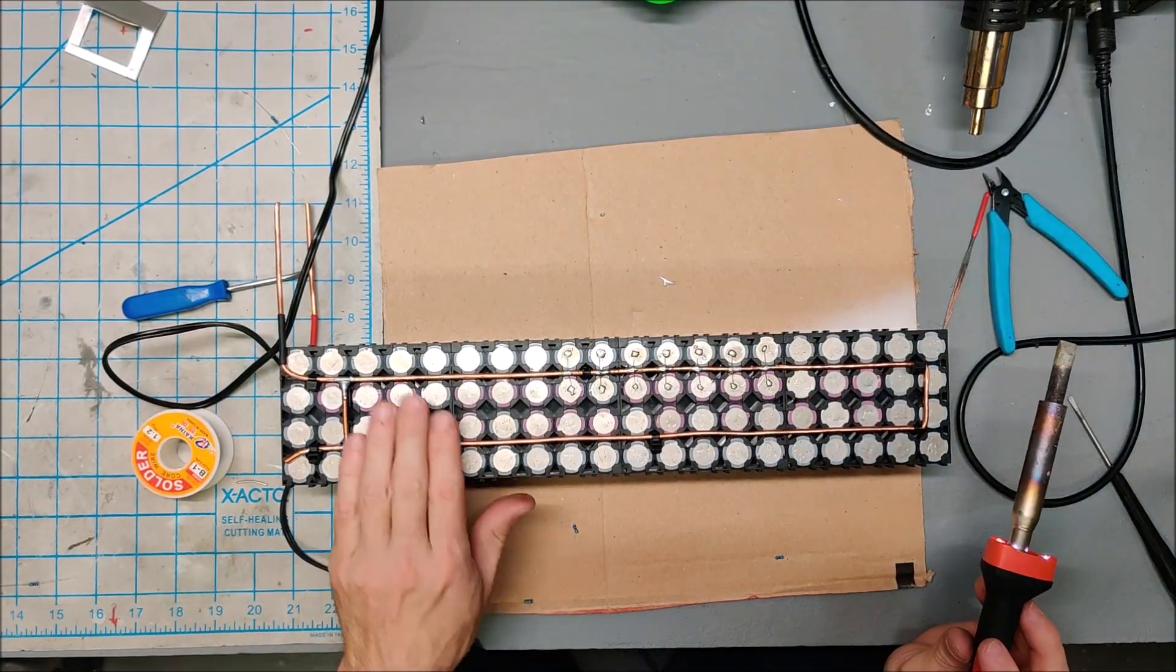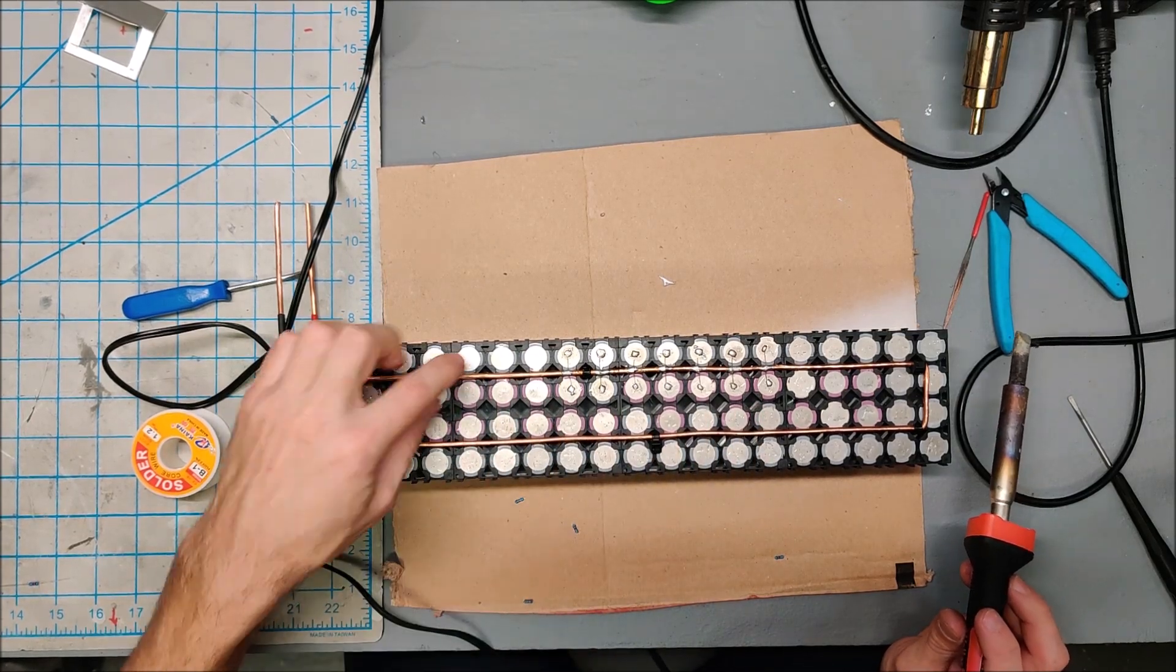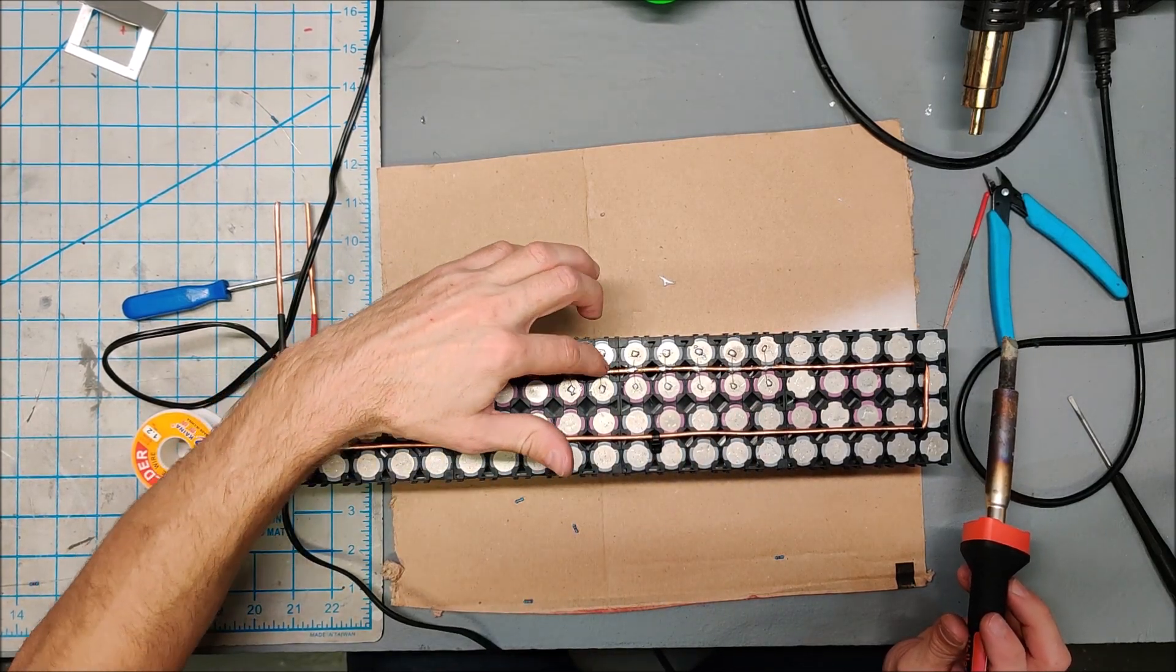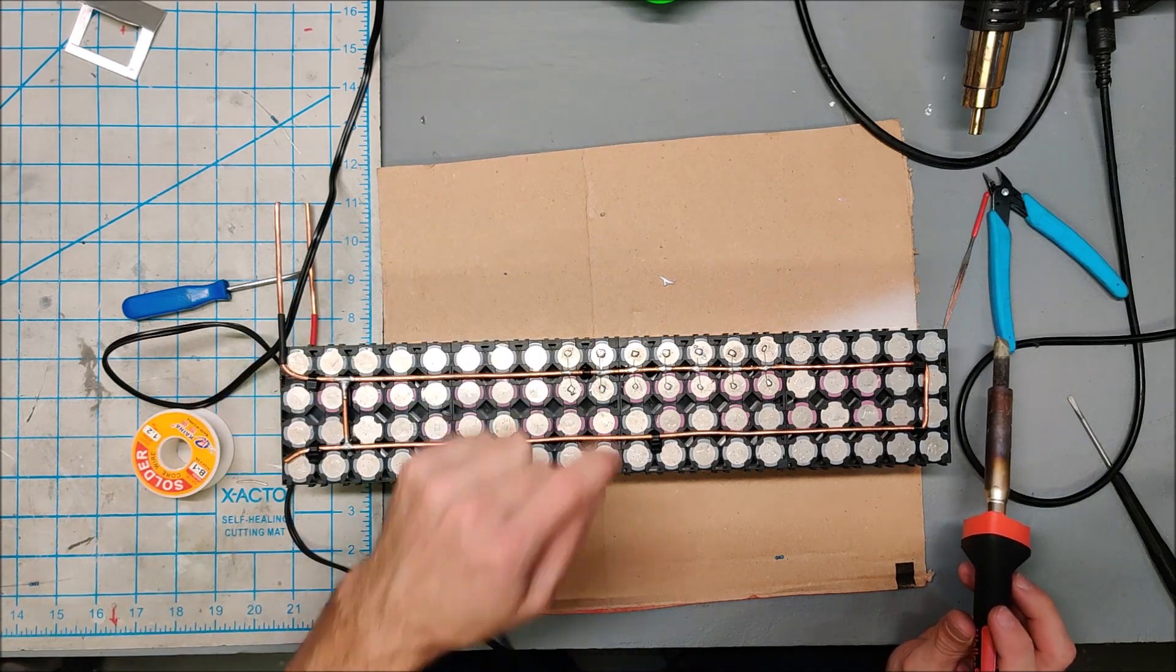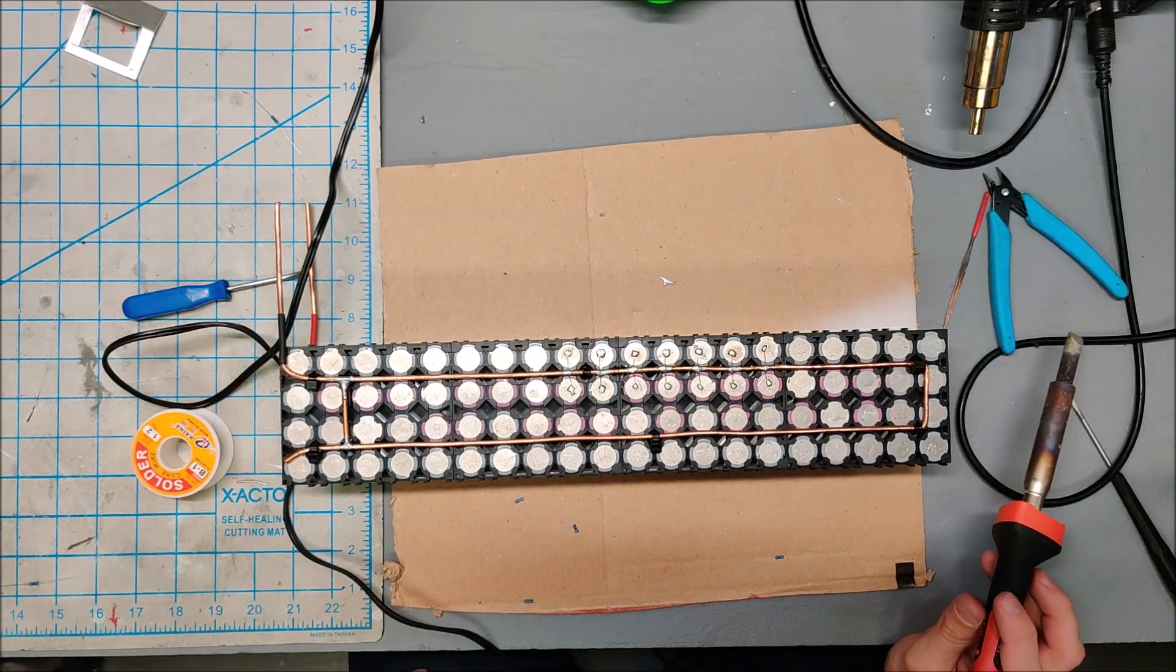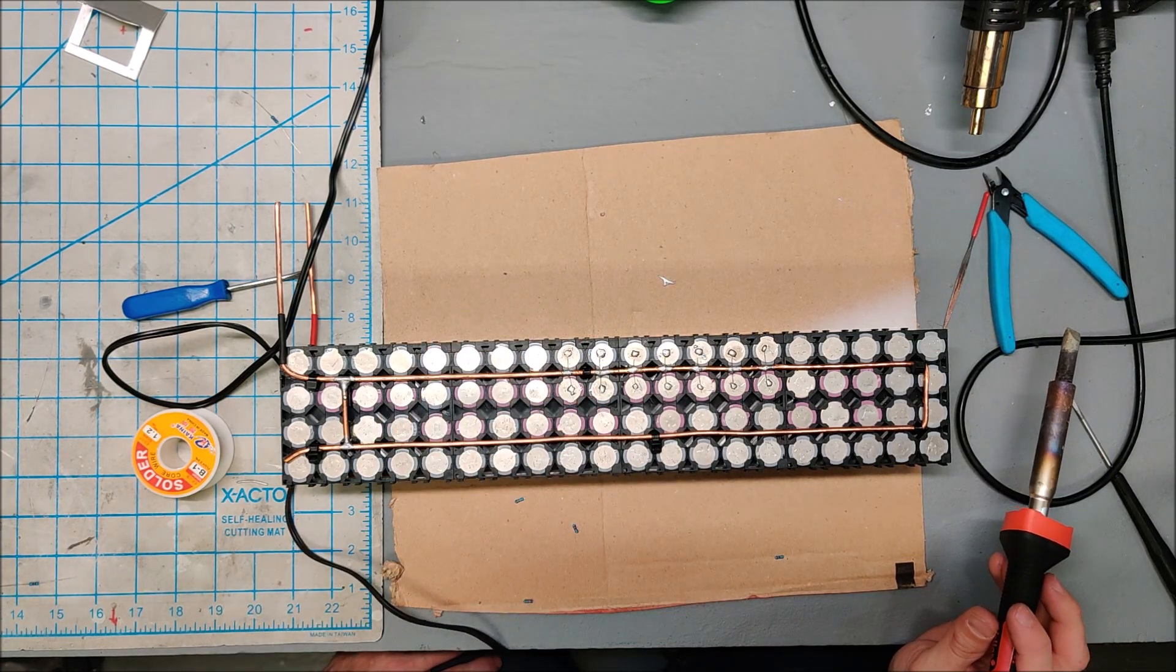Those are beautifully soldered and definitely good electrical connections. Again, if one of these batteries starts to misbehave, that fuse wire will just burn out and disconnect the battery from the main bus bar. That battery will then be safe and the rest of the pack can continue to function.